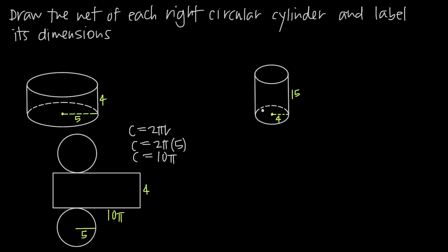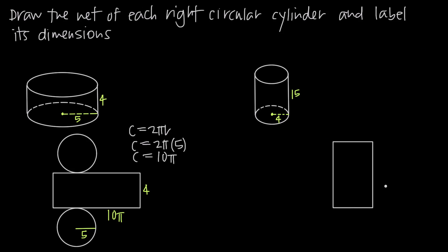Let's do one more example. We have a right circular cylinder with radius 4 and height 15. Again we're going to draw the rectangle that represents the side of the cylinder. This one is going to be much taller and thinner because the height is 15. We know that the radius of each circle is just going to be 4. Then if we want to go ahead and draw the circular top and bottom on each end, we draw one circle for the top and one for the base.